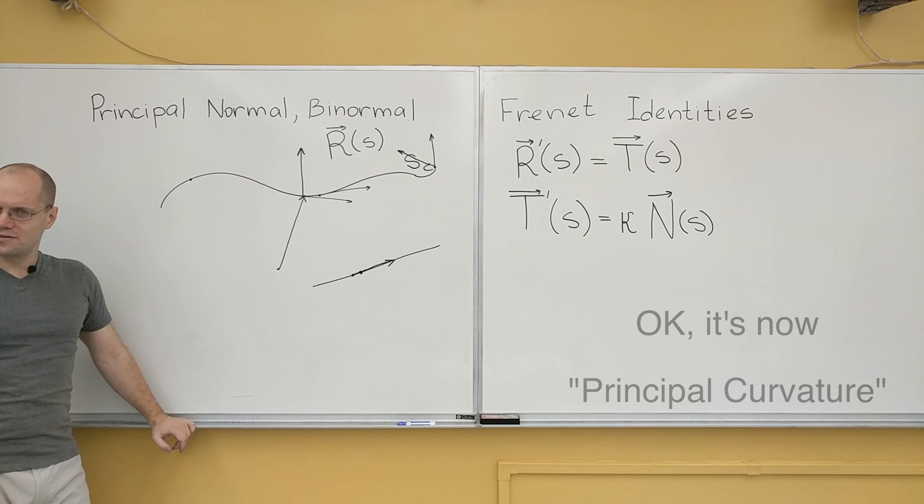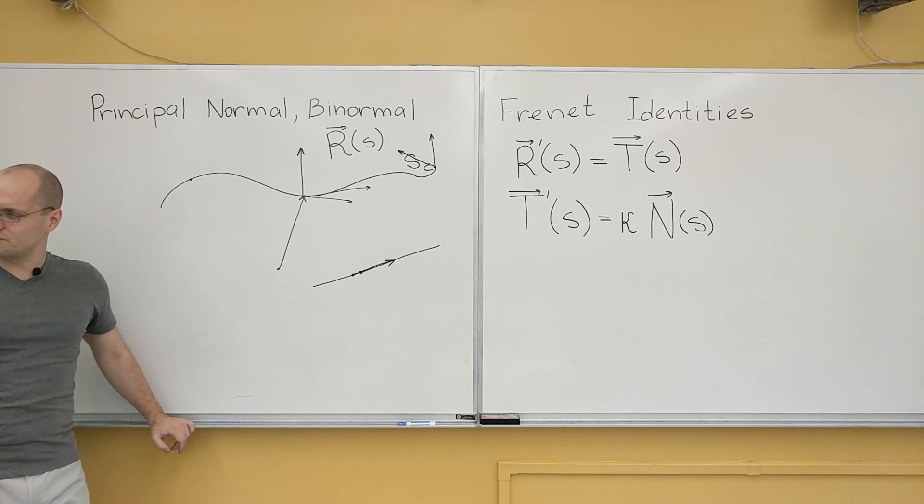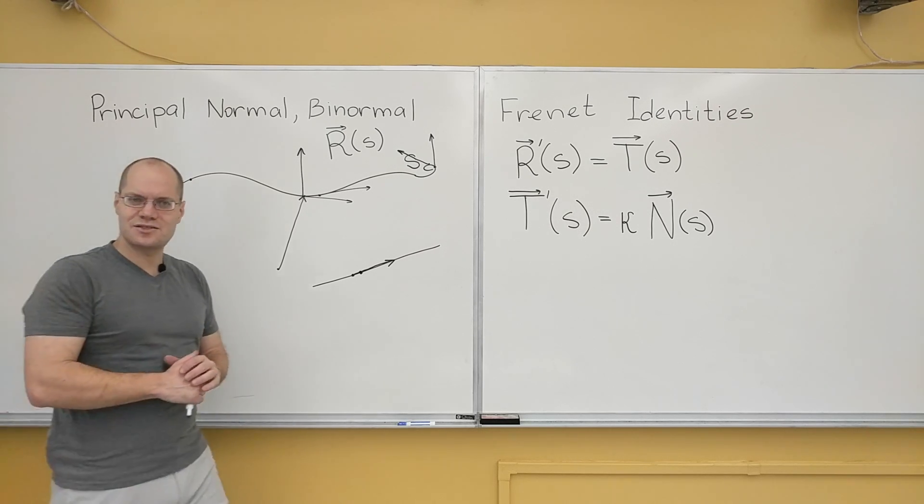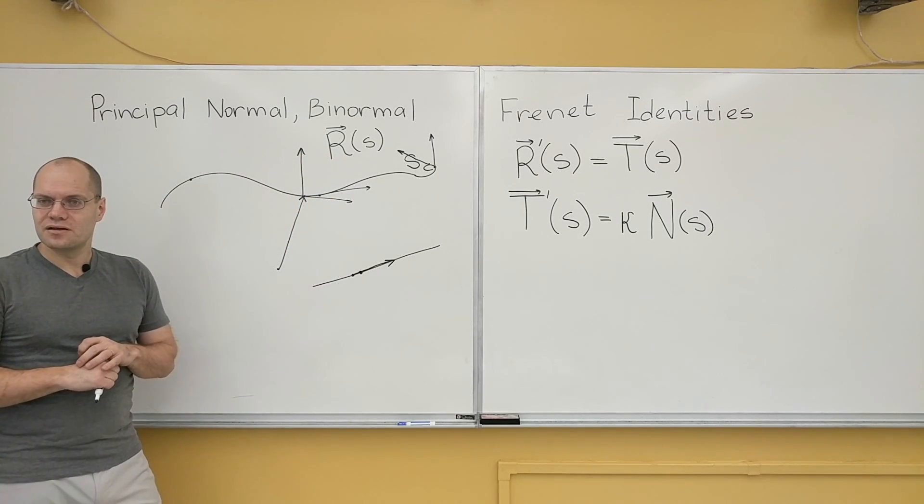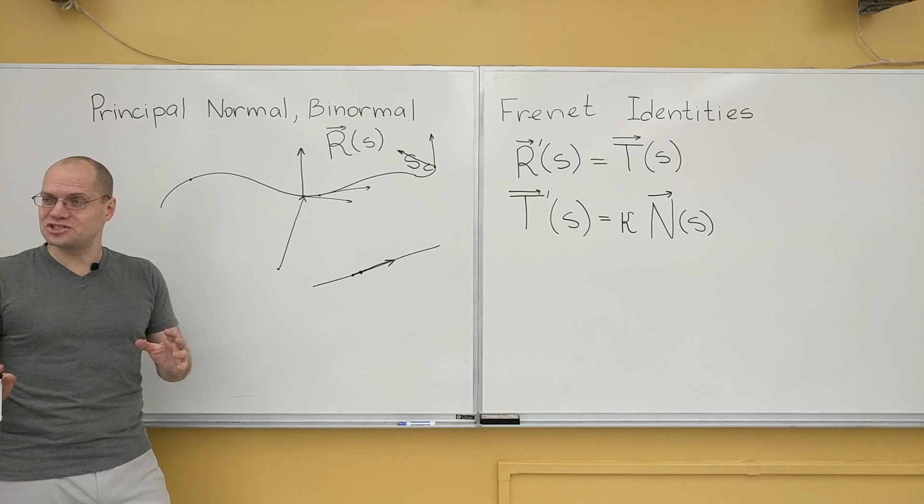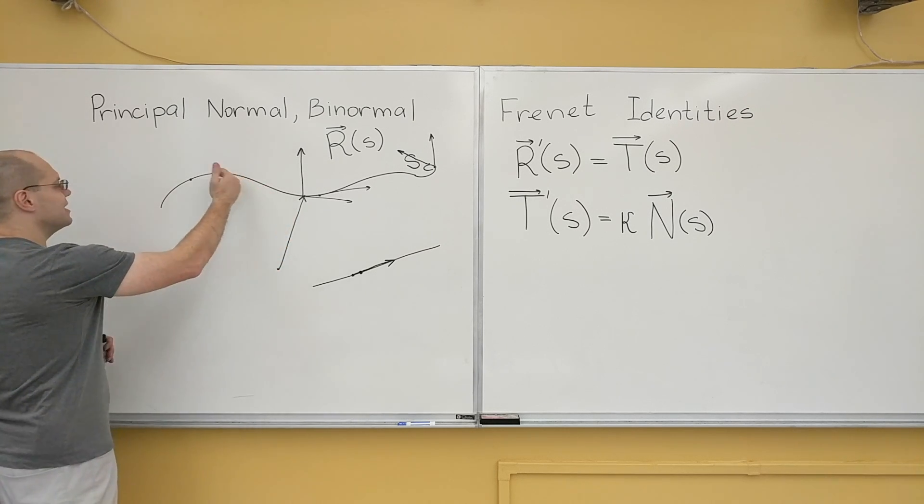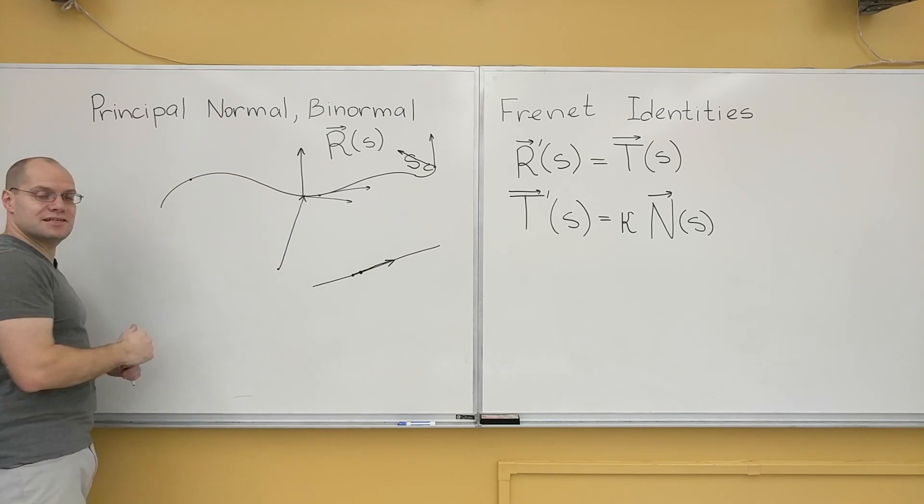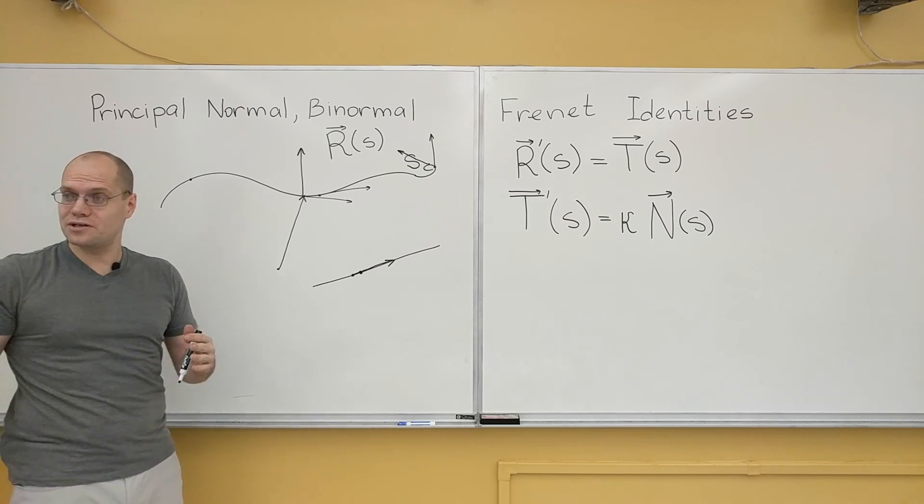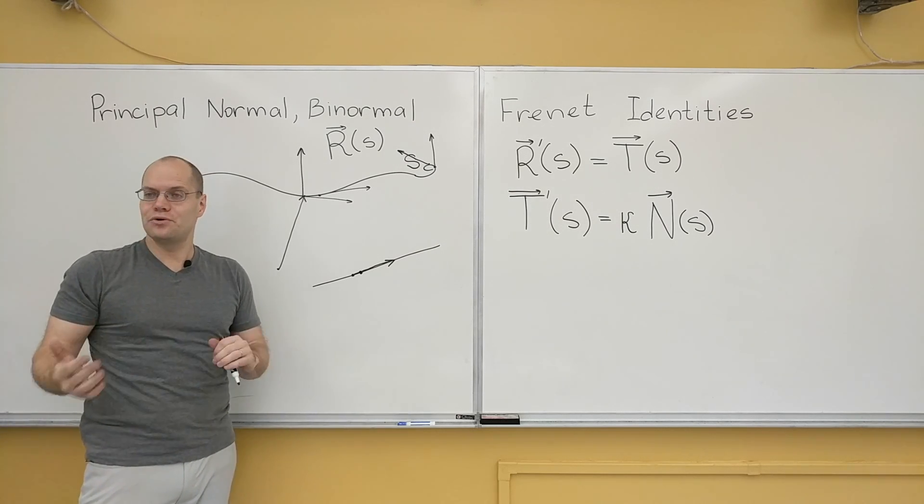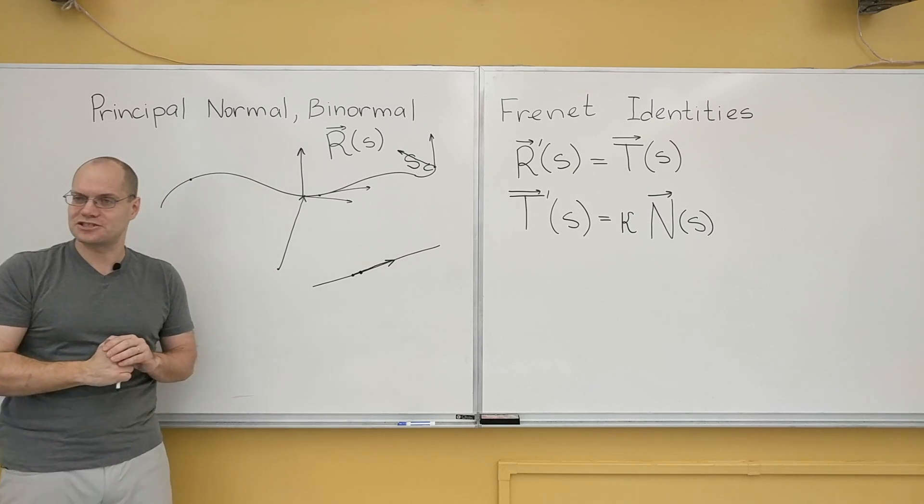Now let's talk about something very, very interesting, which is signs. Signs. The direction. We've discussed the length. Now let's talk about which way it points. And the most interesting question there is, what if I had chosen s to go in the opposite direction? With the tangent point in the opposite direction? And with the normal point in the opposite direction?